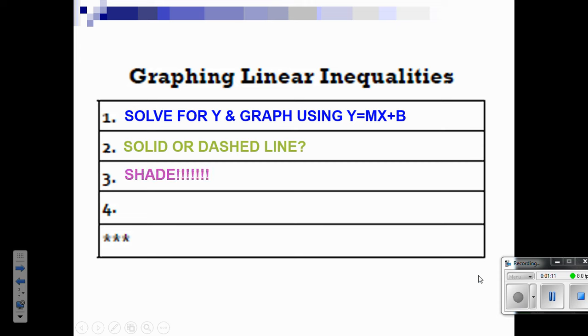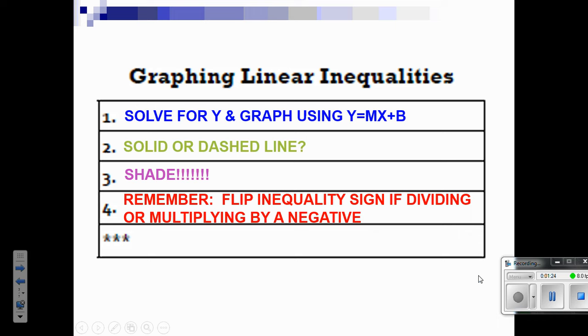Then you're going to shade. You're going to decide which side of the line you shade on and color it in. Remember that you have to flip the inequality sign if you're dividing or multiplying by a negative. Also, don't forget about horizontal and vertical lines, because even those can be linear inequalities.